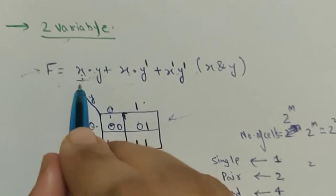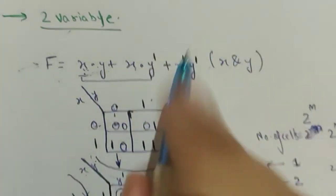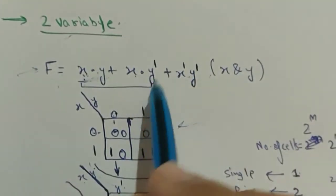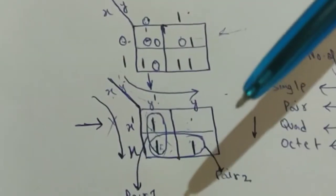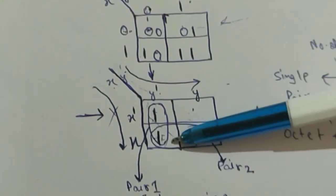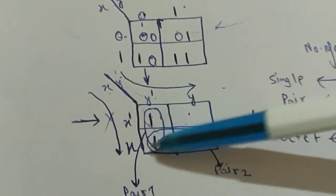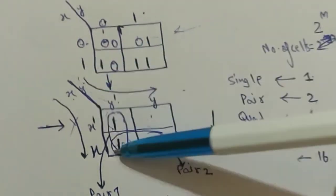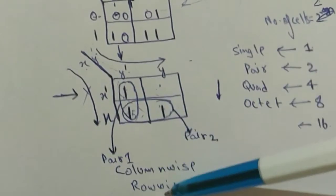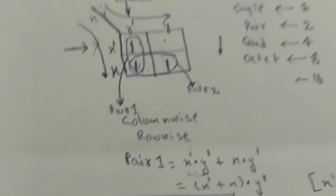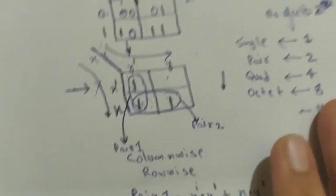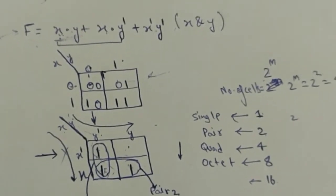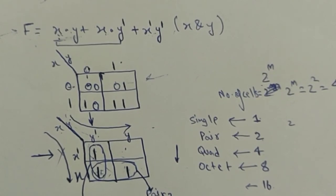You could have simplified this expression using boolean algebra directly, but if the question requires K-map, you use this method. To summarize: draw the K-map, fill in the values, make pairs, quads, or whatever is forming — column-wise and row-wise only, no diagonal. Write the values of each pair, then add the pairs together to get f. That was how to make a two variable K-map. Hope you liked the video — like, share, and if you have any doubts, write them in the comment section. Thank you guys.